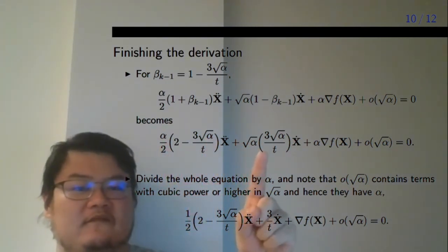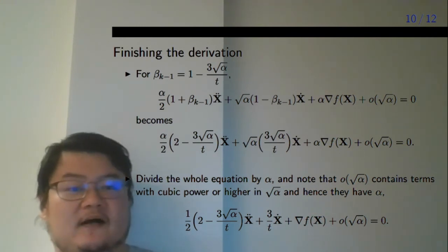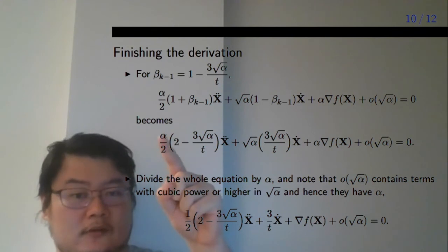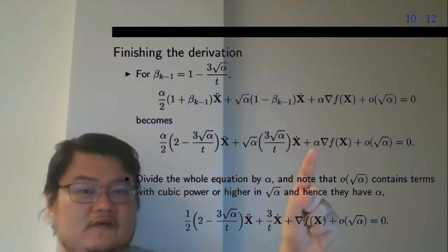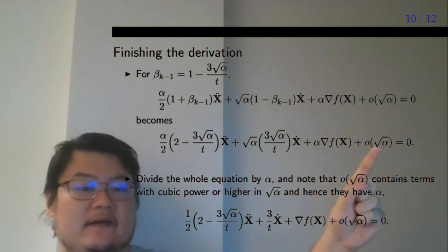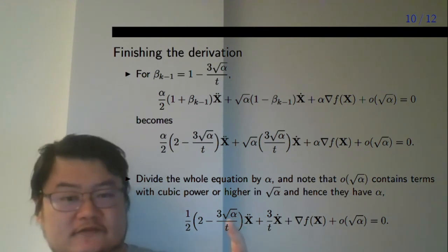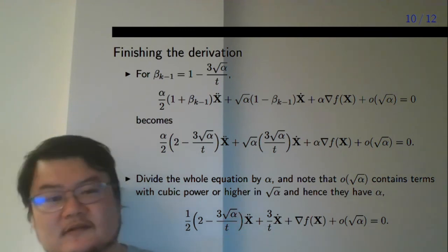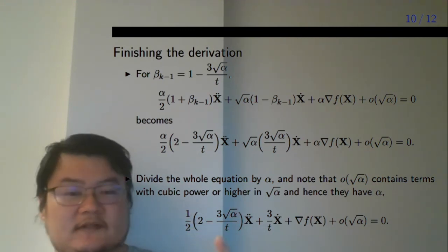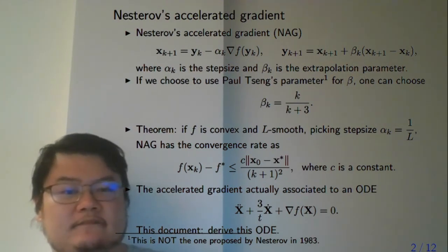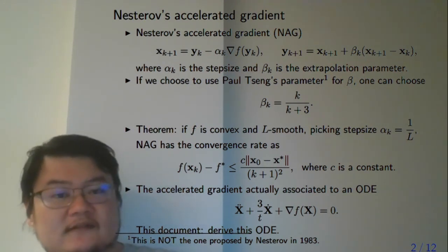You have alpha appearing in multiple terms, so you divide the whole equation by alpha. This term disappears, the square root alpha terms cancel, and this alpha disappears. Terms with more than enough alpha factors remain. Then you take the limit as square root alpha goes to 0. This term disappears, and because of that, the one-half and the two combine so this term becomes one. Therefore, you have the final ODE. This is the illustration of how you derive from NAG to this ODE using this choice of beta.